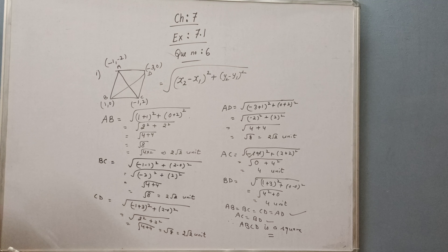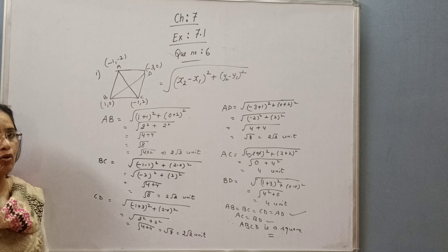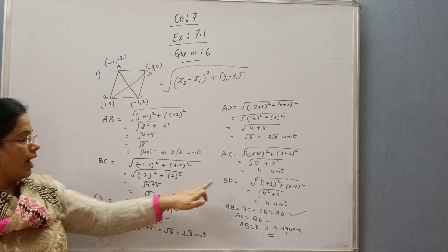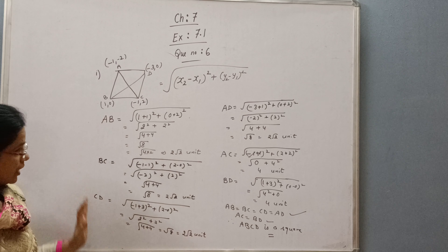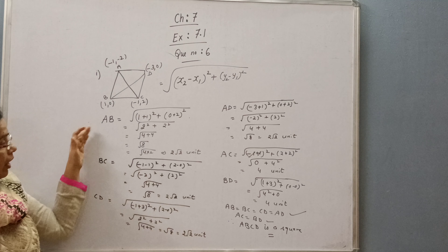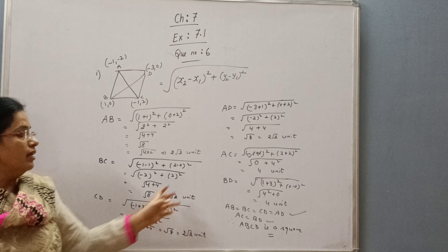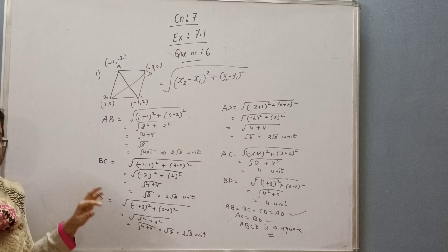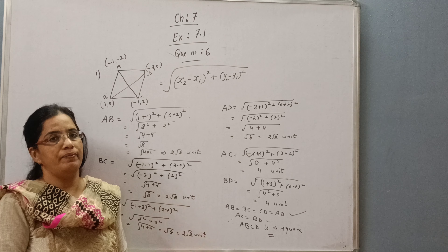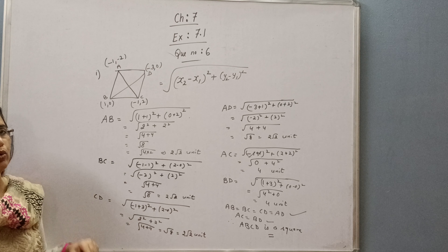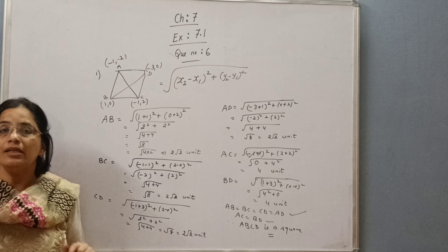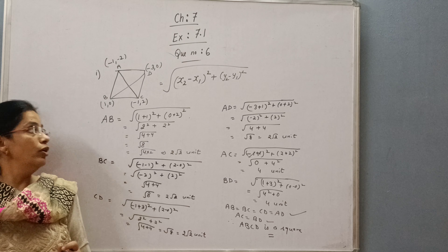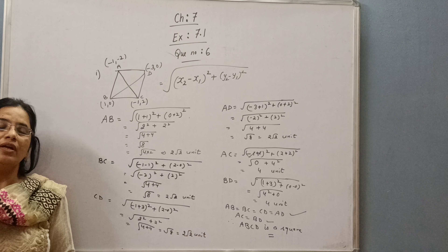In this way you can find parts 2 and 3 as well. You have to find all the sides and the diagonals. If all sides are equal and diagonals are equal, then it is a square. If all sides are equal but diagonals are not equal, then it is a rhombus. If opposite sides are equal and diagonals are equal, then it is a rectangle. If opposite sides are equal and diagonals are not equal, then it is a parallelogram. If you find any doubt in parts 2 and 3, you can write in the comment section. I hope you all have understood very well. Thank you for watching. Have a nice day.